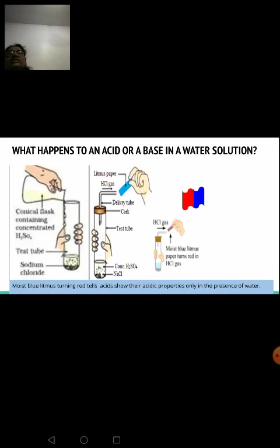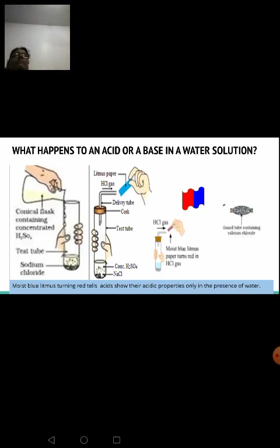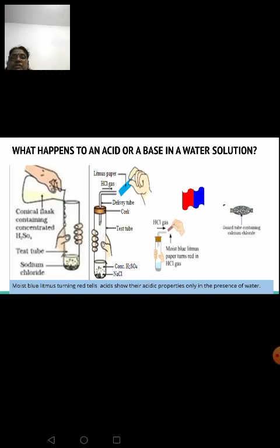If the atmosphere is moist or humid, a guard tube is used in the delivery tube setup. This guard tube contains calcium chloride, which absorbs moisture, so the gas coming out is completely dry. A guard tube is used whenever you want to collect a dry gas — the calcium chloride absorbs moisture and allows the gas to exit in dry form.